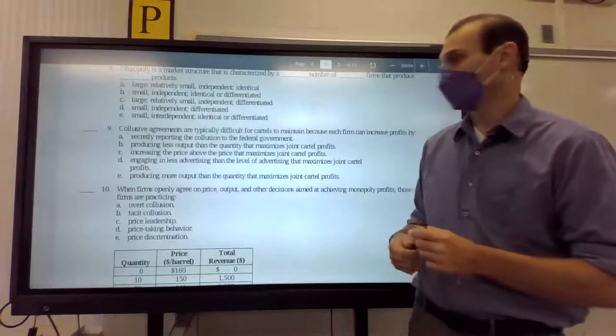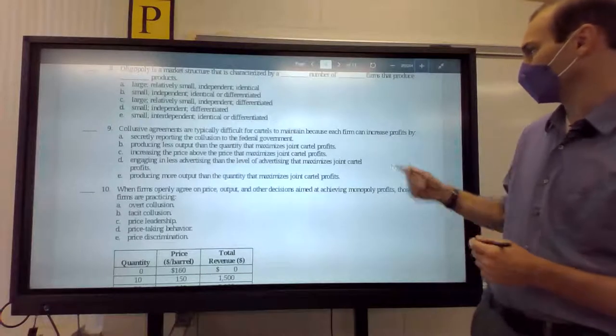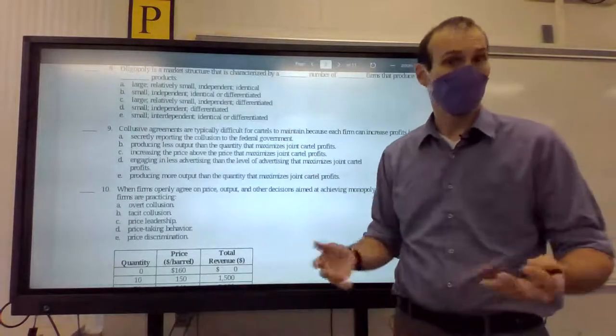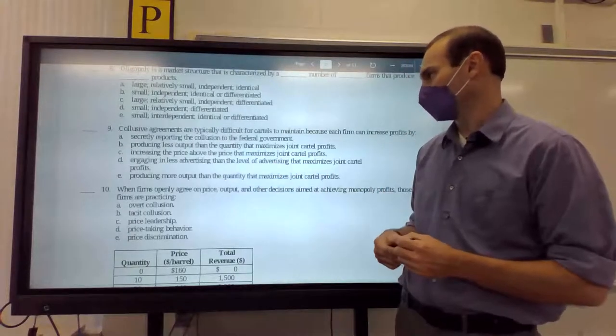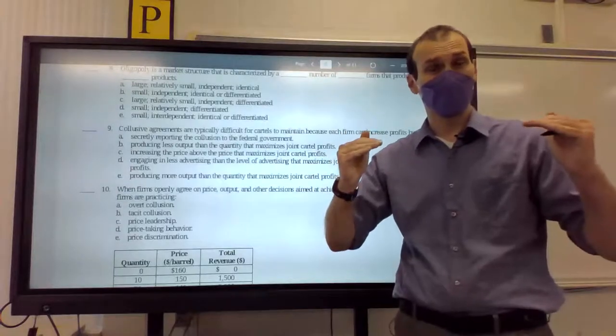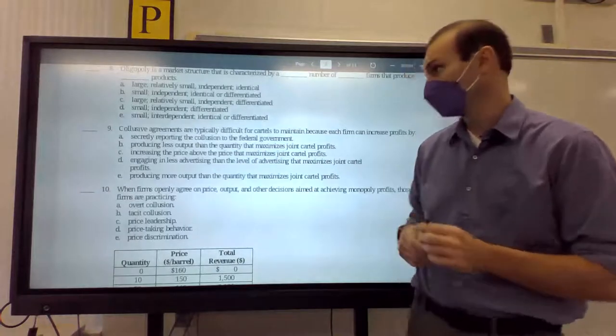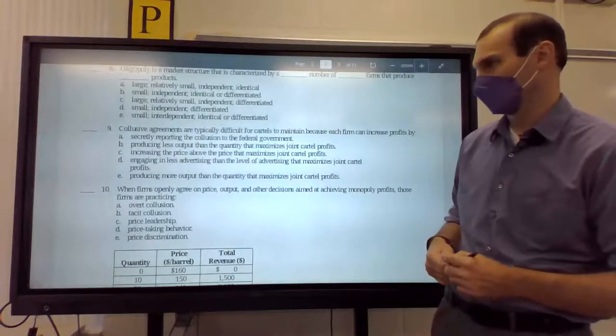But let's move on to nine. Collusive agreements are typically difficult for cartels to maintain because each firm can increase profits by, well, not by reporting collusion to the government. They both go to jail. Producing less output in quantity that maximizes joint cartel profits. No, cartels tend to reduce production so that the price raises and they can get more profit.